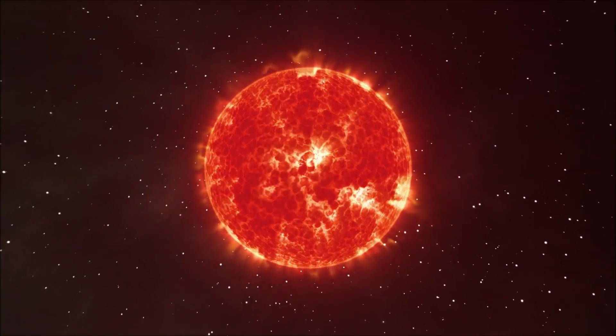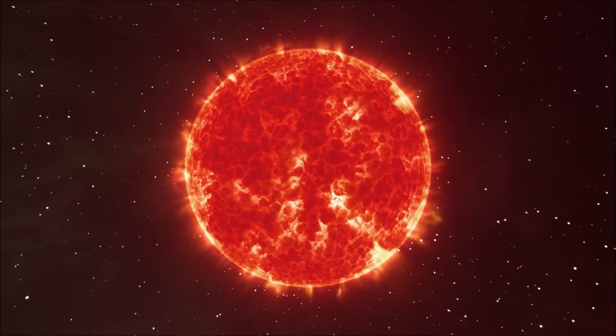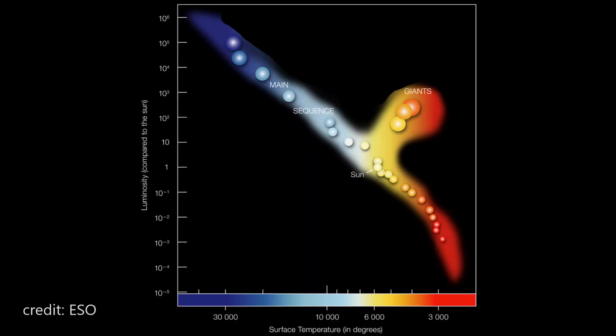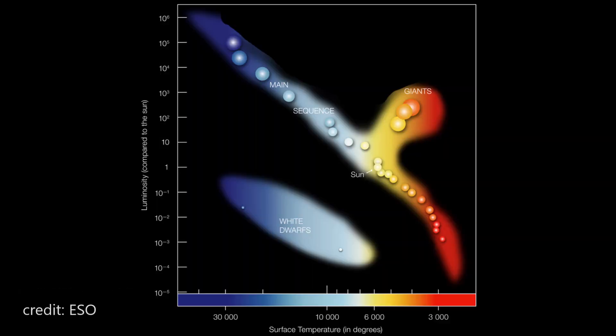Red giants are stars that have exhausted the hydrogen fuel in their cores and have begun to expand. They are located above the main sequence on the HR diagram and are much larger and less luminous than main sequence stars. White dwarfs are the remnants of stars that have exhausted all their fuel and have collapsed into a small, dense object. They are located below the main sequence and are very faint.